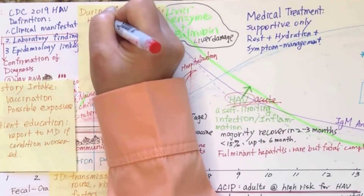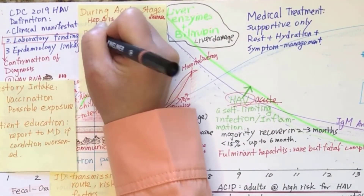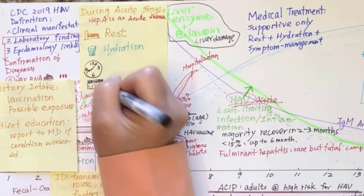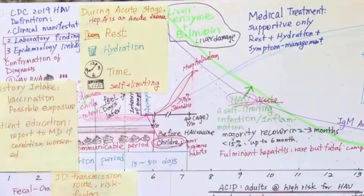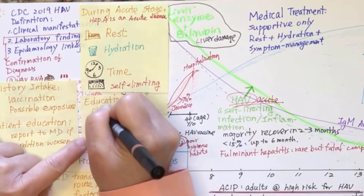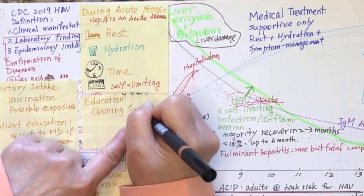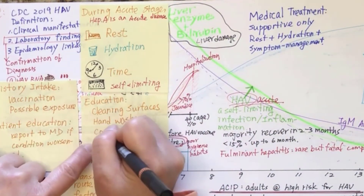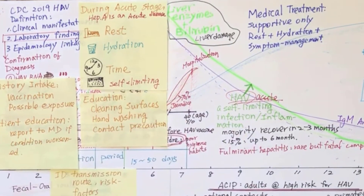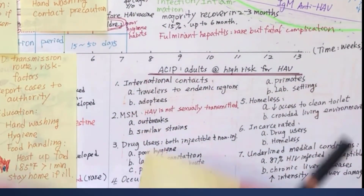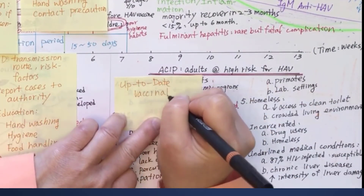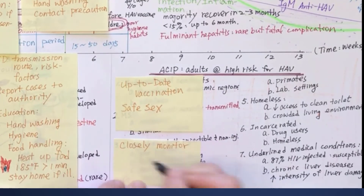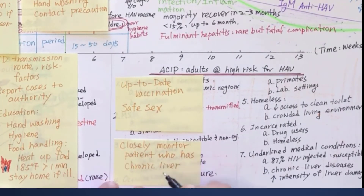Encourage rest and promote hydration as tolerated. Reassure the patient that hepatitis A viral infection is self-limiting. Teach the family and patient to clean the surface of household items and encourage strict handwashing and proper hygiene practices. Teach the patient and family to take contact precautions. Encourage up-to-date vaccination and safe sex practices. Closely monitor patients with chronic liver diseases if they are infected with hepatitis A.